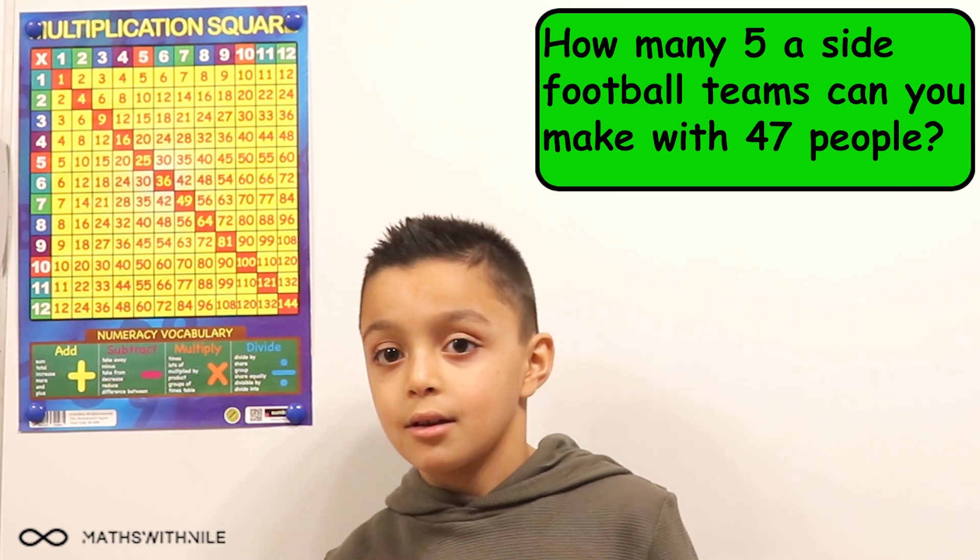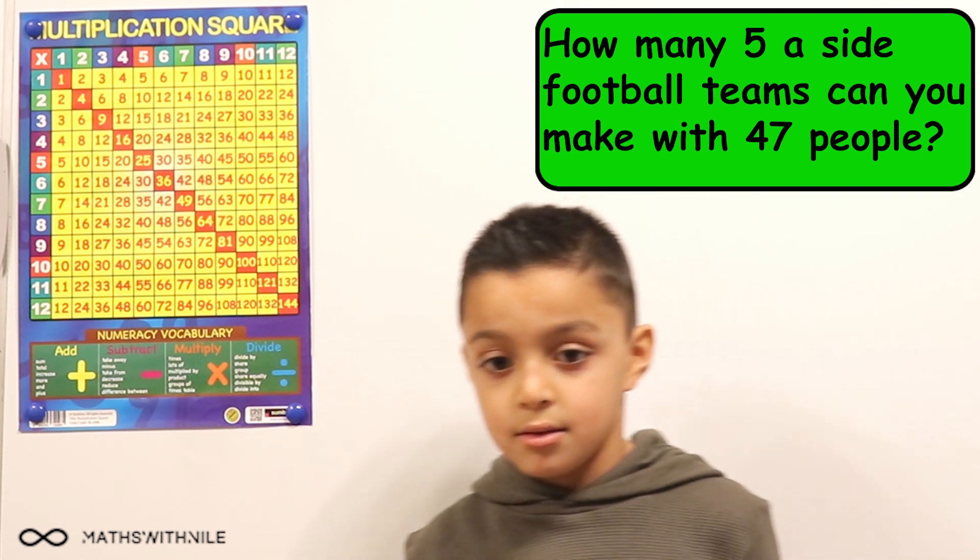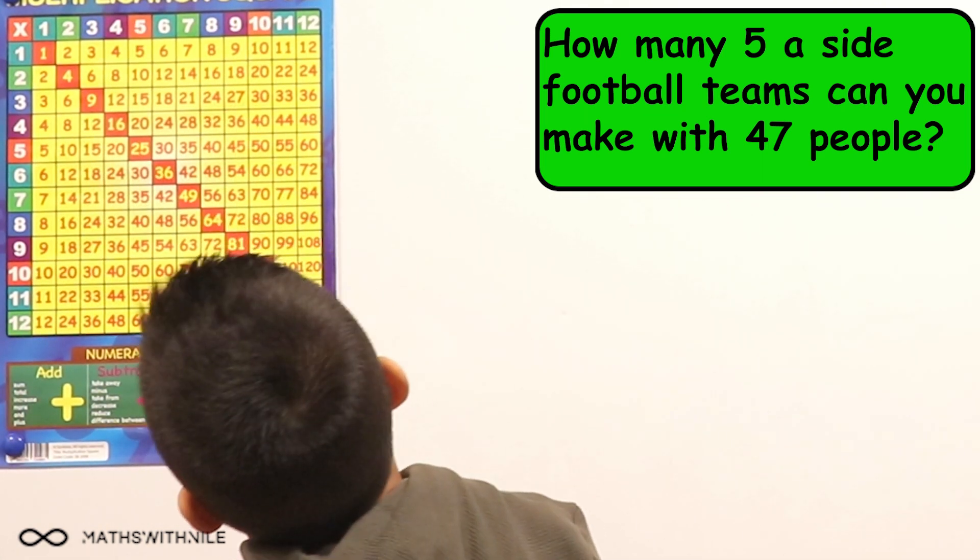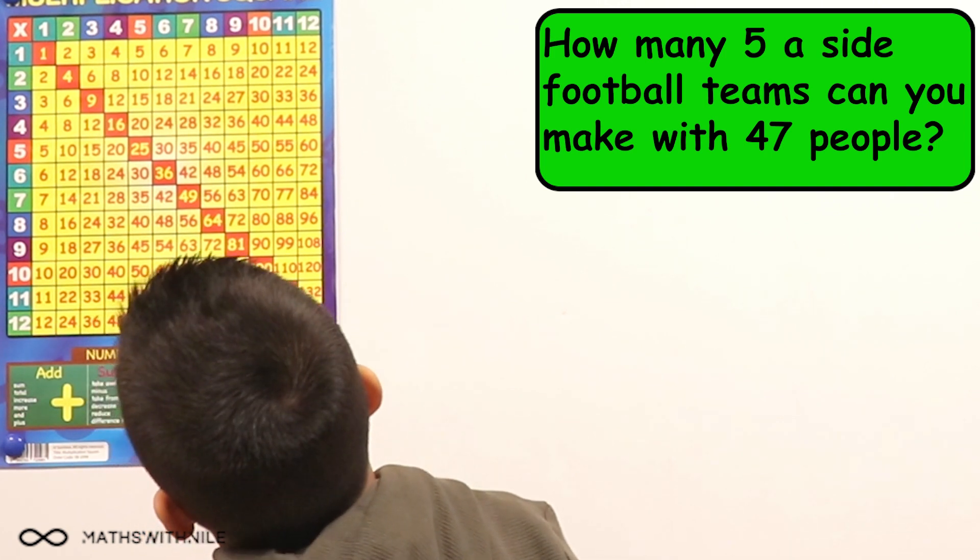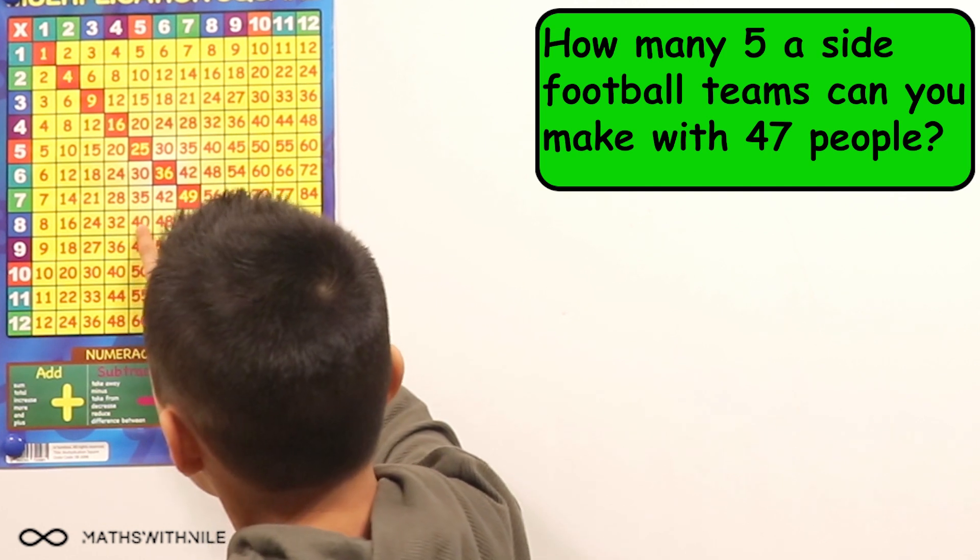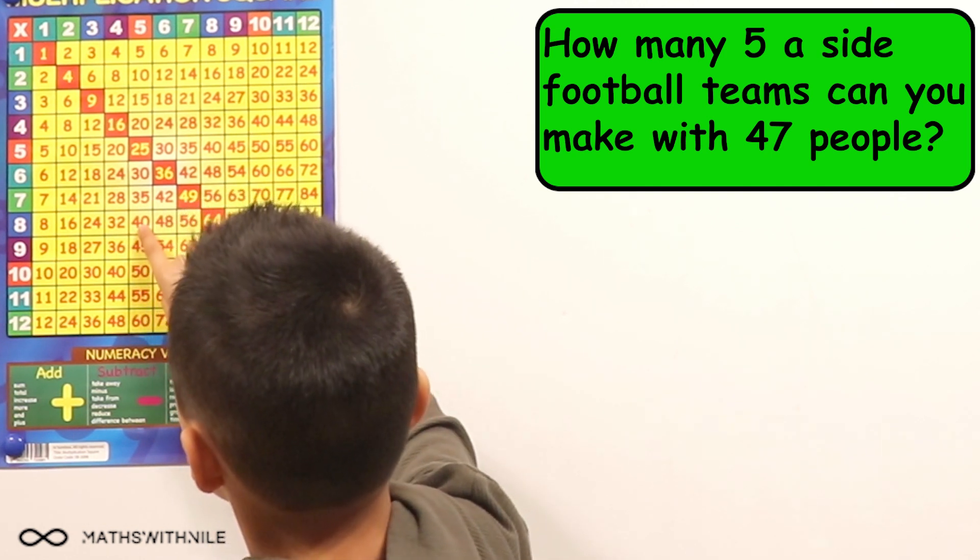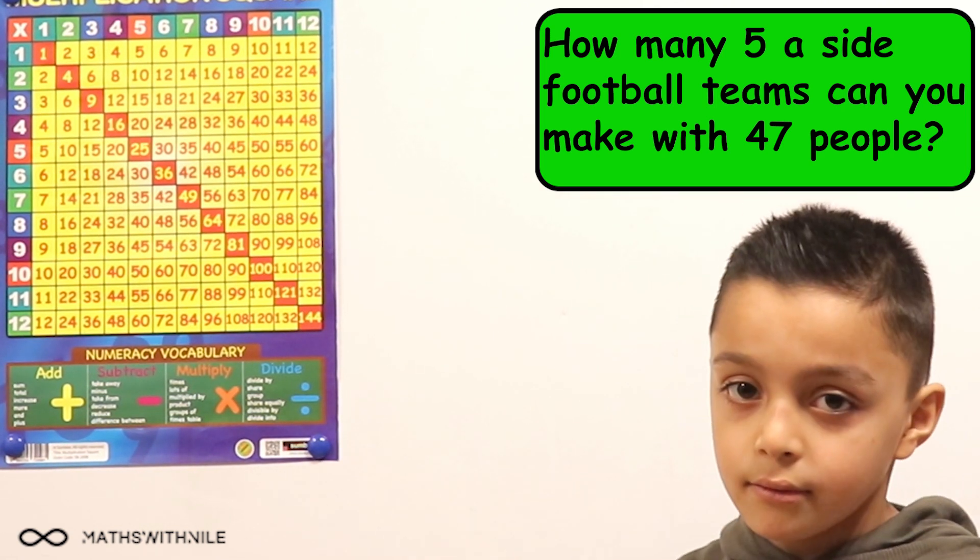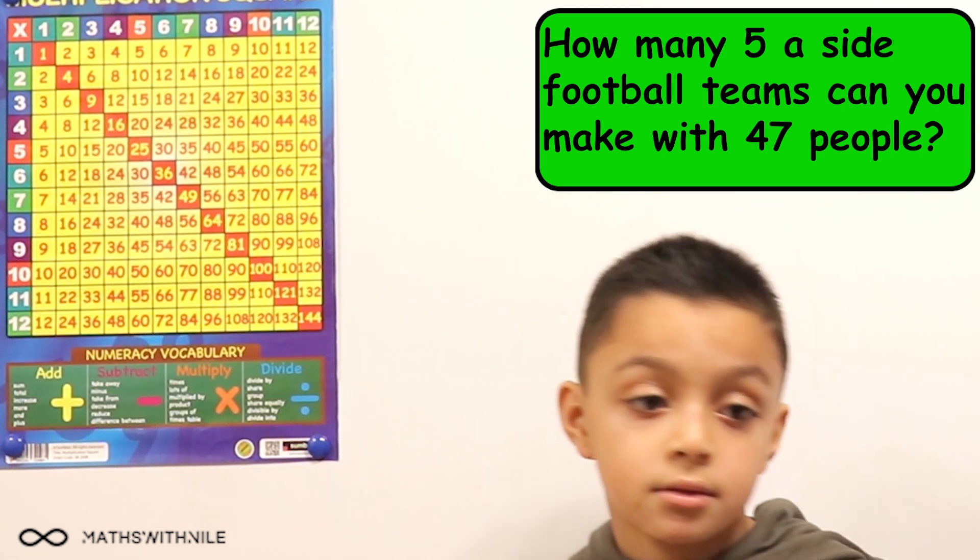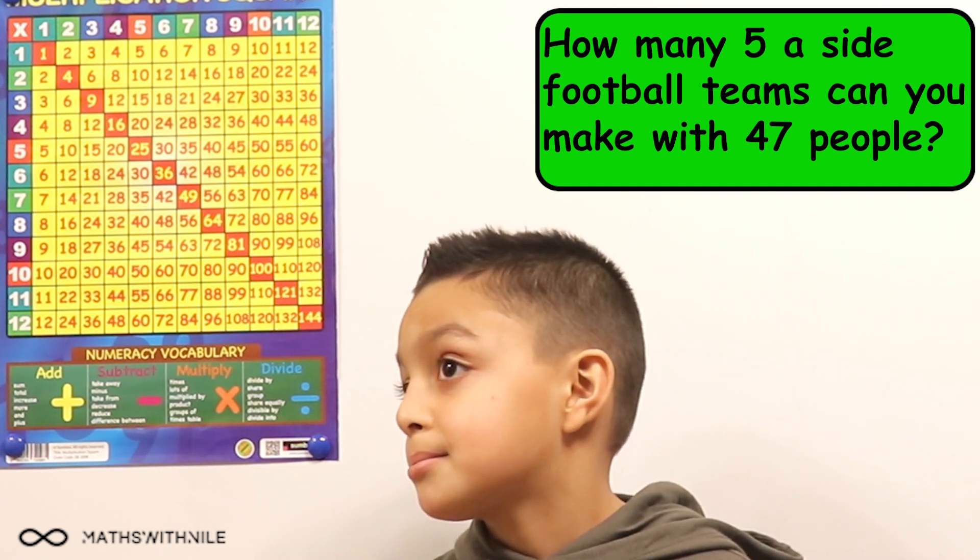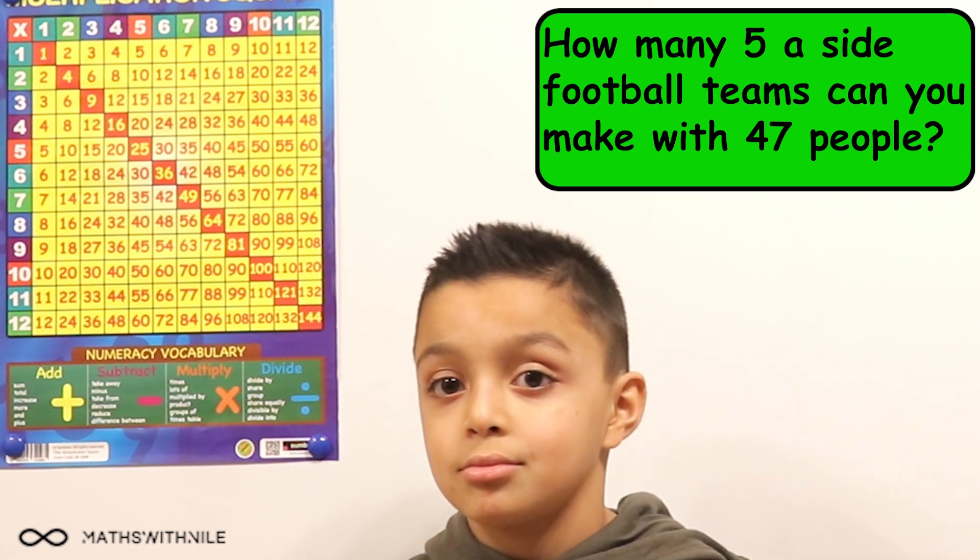Let's start with how many times five goes into 45. Forty-five. How many times five goes into 45? Five goes into 45. Nine times. Nine times. So what does that tell you? If five goes into 45, nine times.